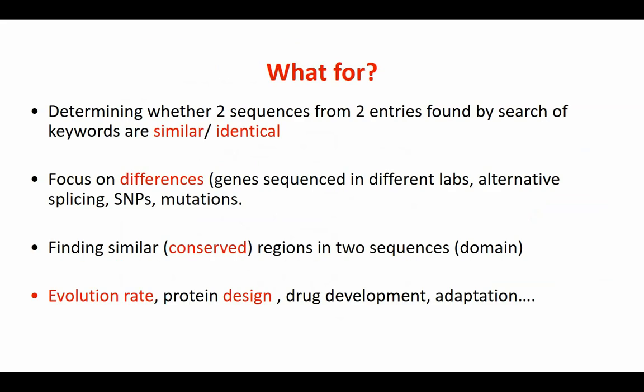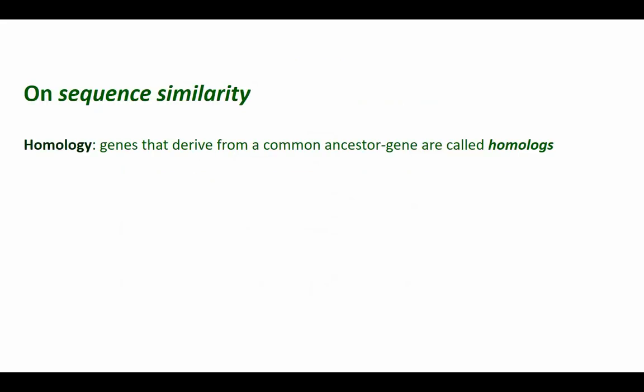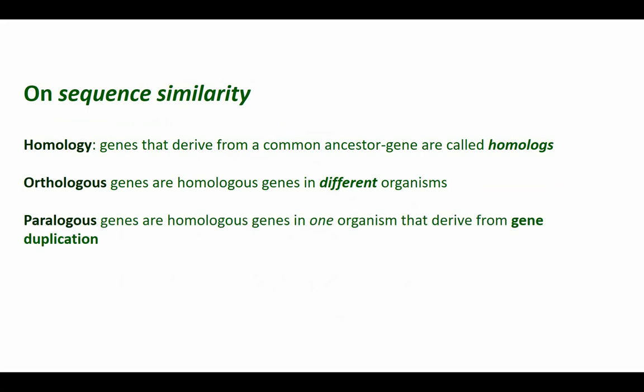Why do alignment? It's very obvious. Even in NGS, you need alignment to know which piece comes with which piece. Also, when you have sequences, you want to know their similarity, find mutations, identify conserved regions, find evolutionary rates, and understand protein design. I don't know of any biological question — at the molecular level — that is not related to one of these. That's why it's so fundamental. Orthologues are homologues in different organisms; paralogues are homologues within the same organism, usually as a result of gene duplication.